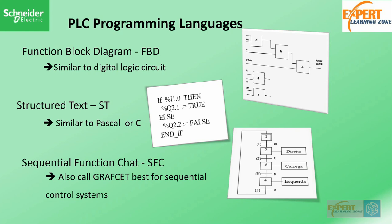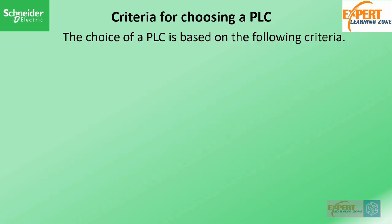Finally, we have Sequential Function Charts, also called Grafcet. We use this paradigm to implement automated systems that function based on predefined sequential steps. For example, a streetlight system becomes very easy to implement with a Sequential Function Chart.